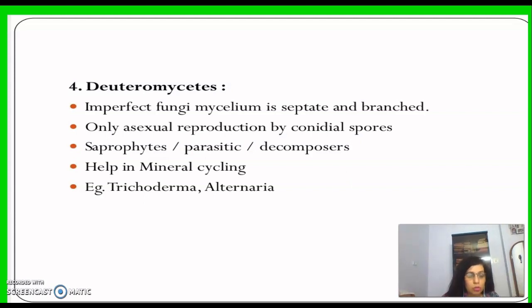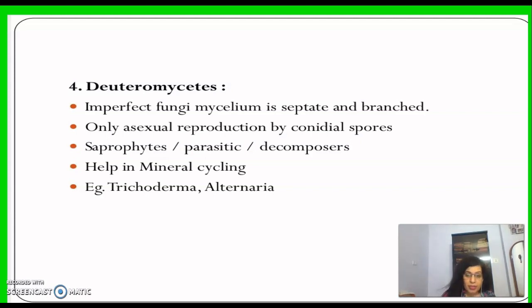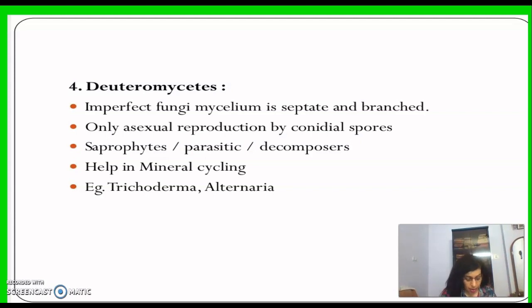Deuteromycetes is called imperfect fungi because only asexual and vegetative phases are known. When the sexual forms are discovered, these fungi are shifted to other classes. It is possible that the asexual or vegetative stage has been given one name and placed under Deuteromycetes, while the sexual stage is given another name and placed under another class.